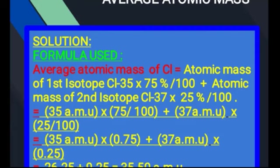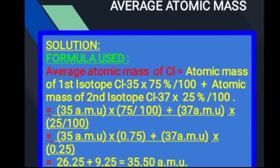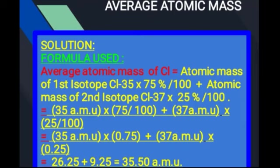35 × 75/100 + 37 × 25/100 — اب solve کریں گے: 75 divided by 100 = 0.75 اور 25 divided by 100 = 0.25۔